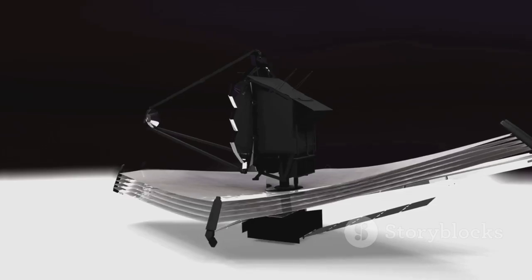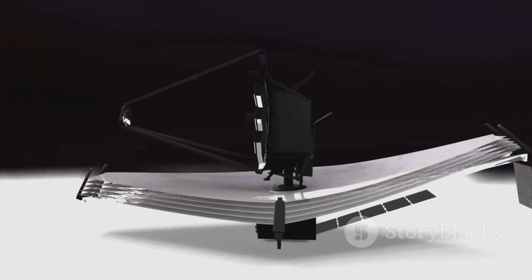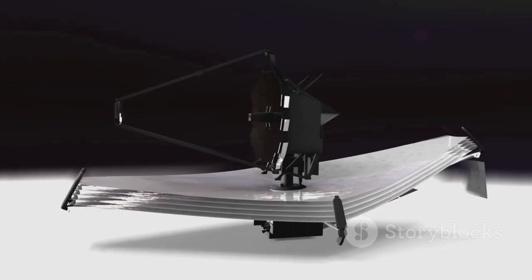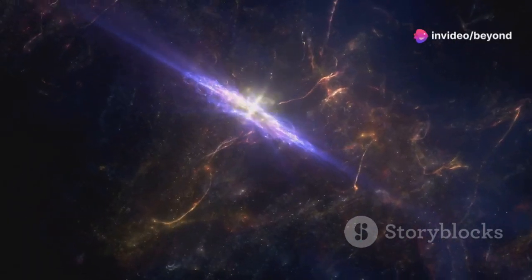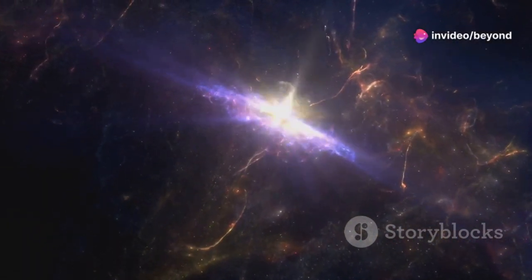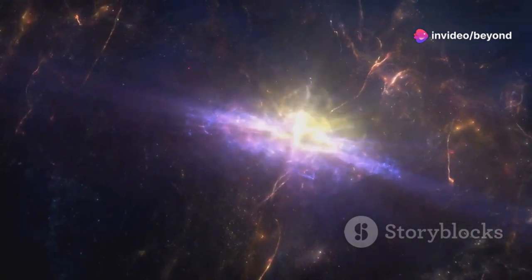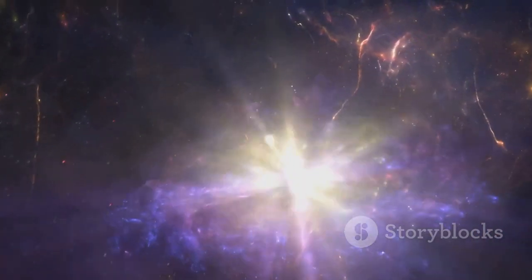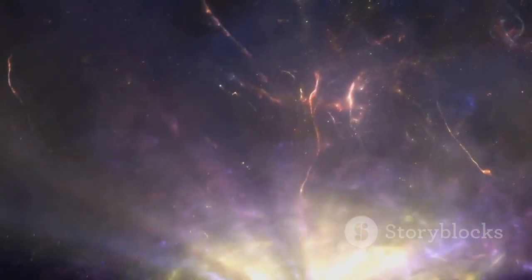Unlike Hubble, which primarily observes visible light, Webb is optimized to detect infrared radiation. This is crucial for studying the early universe, as the expansion of space has stretched the light from these ancient objects, shifting it towards the infrared part of the electromagnetic spectrum.